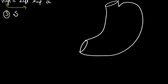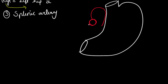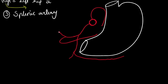Now regarding the third branch, the splenic artery: the celiac trunk gives the left gastric artery, then the common hepatic artery, which gives the gastroduodenal artery dividing into the superior gastroduodenal artery and right gastro-epiploic artery. The proper hepatic artery divides into right and left hepatic arteries, and the right hepatic artery gives the cystic artery, which supplies both surfaces of the gallbladder.